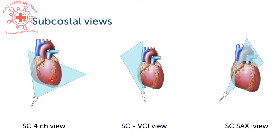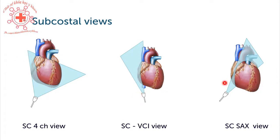With the four chamber view we're cutting through all four chambers of the heart. The only difference to the apical four chamber view is that we are coming more from the right, so the septum will have a different position. Then we have the long axis view, where we image the IVC and also the SVC. And then the subcostal short axis view — by rotating the probe we can get a short axis view at any level: at the base, at the mid, and even at the more apical parts of the ventricle.